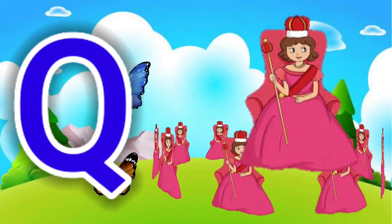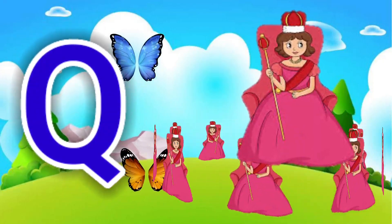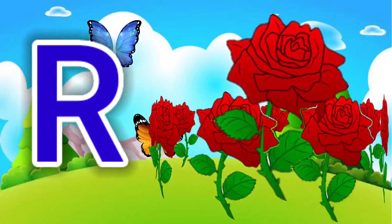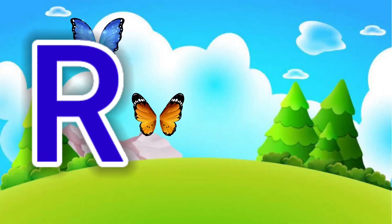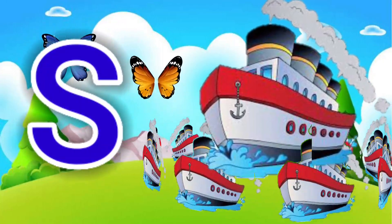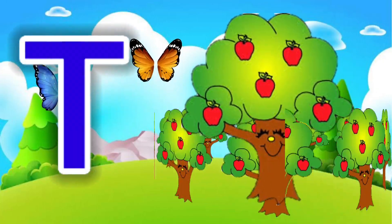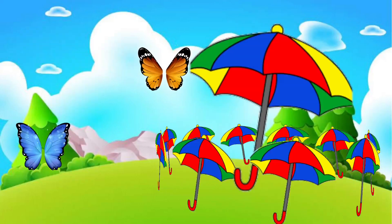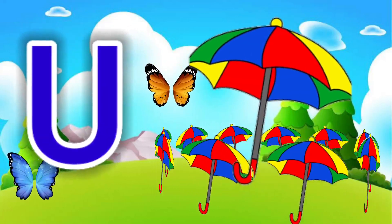P for peacock, Q for cream, R for roach, S for sheep, T for tree, U for umbrella.